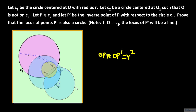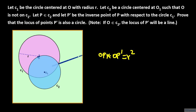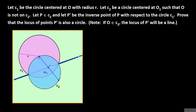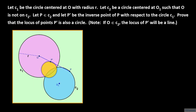If it so happens that the center O of C sub 1 is on C sub 2, then P prime will trace a straight line as P moves around the circle C sub 2. This situation when O is on C sub 2 is a separate case from what we present here. However, the proof for this situation is very similar to the proof of the case that we present here, which is when O is not on C sub 2.